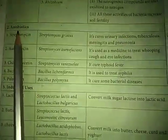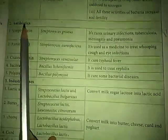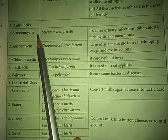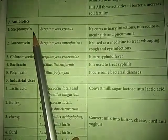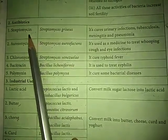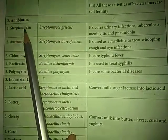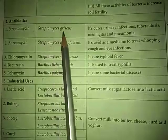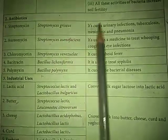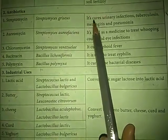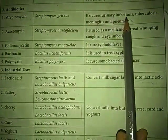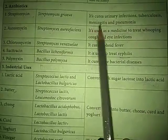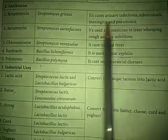Second — uses of bacteria in antibiotics. The antibiotics include streptomycin, aureomycin, chloromycin, bacitracin, and polymyxin. First, streptomycin, produced by Streptomyces griseus. It cures urinary infections, tuberculosis (TB), typhus, and pneumonia fever.